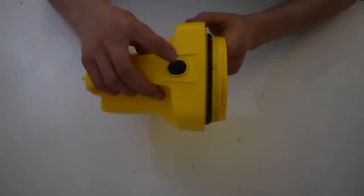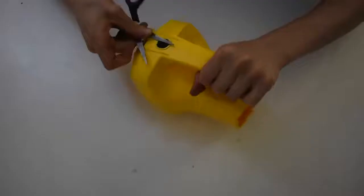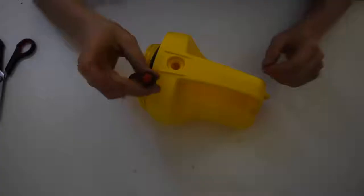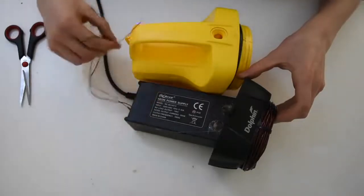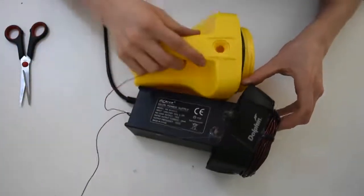Next we need to replace the button with our red momentary switch. The two wires we were working on earlier will now come up through the handle and out of the hole at the top.